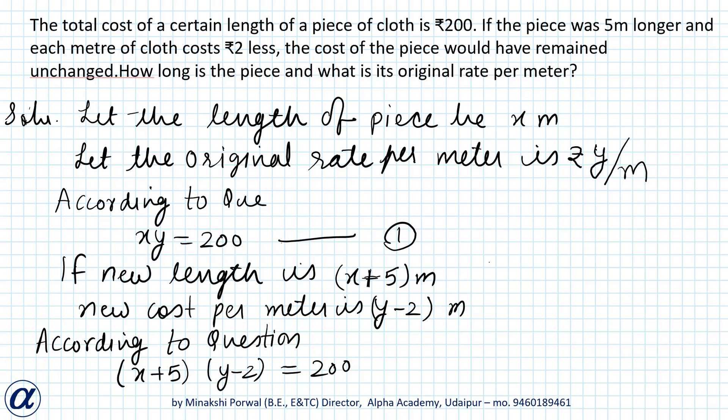In this question, the total cost of a certain length of piece of cloth is Rs.200. As there are two unknown quantities, length of the piece and original rate per meter, we'll take two variables. Let the length of piece be x meters and rate per meter is Rs.y per meter. Now total cost is given by length into rate, so the equation comes to be xy equals to 200.